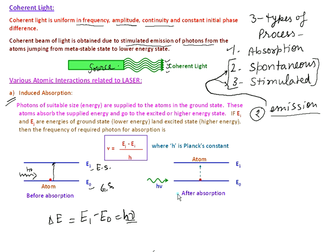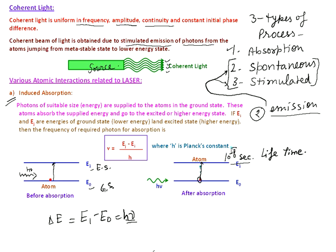Absorption is a process in which a photon of suitable frequency is absorbed by the atom, and as a result the atom goes into the excited state. The atom stays there up to 10 to the power minus 8 seconds or less. This is known as the lifetime of the excited state, or simply state E1. After this lifetime, the atom jumps into the ground state, and that process is known as the emission process.